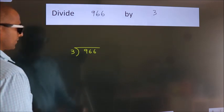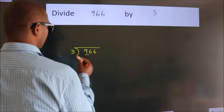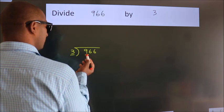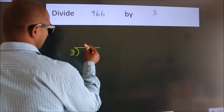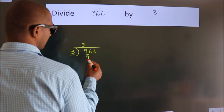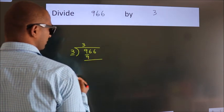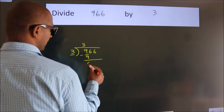Next, here we have 9, here 3. When do we get 9 in the 3 table? 3 3's are 9. Now we subtract and we get 0.